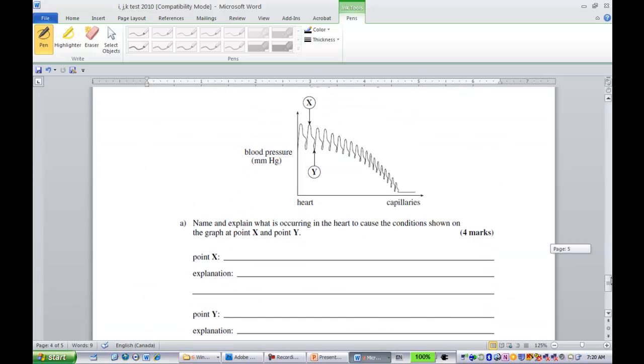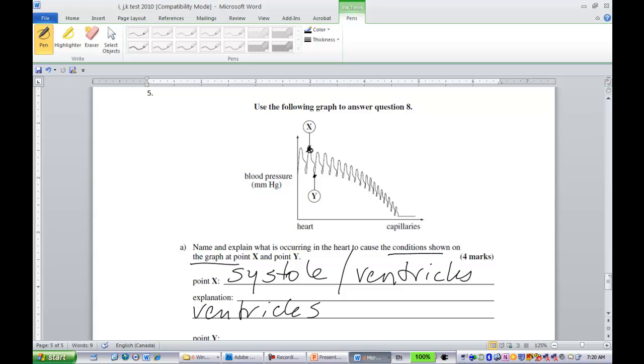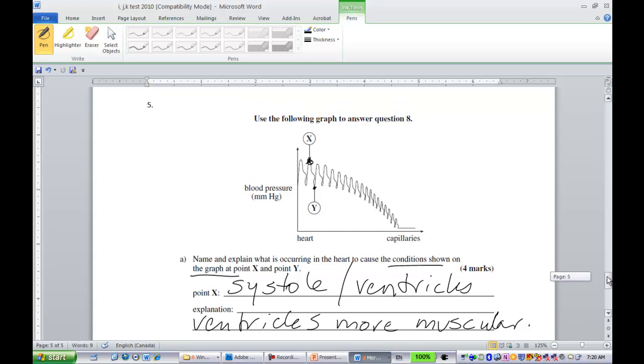Last question, we could have used the fancy words. Where we see point X, obviously, blood pressure is higher. And then in the trough at point Y, blood pressure is less. At point X, we either call this systole, or we don't have to know those fancy words. We can just say the ventricles are contracting, or ventricular contraction, either or. The explanation, so why? Because the ventricles are more muscular. They are the muscle part of the heart. They create a higher BP. Again, this is related to, pertaining to, structure of the heart.